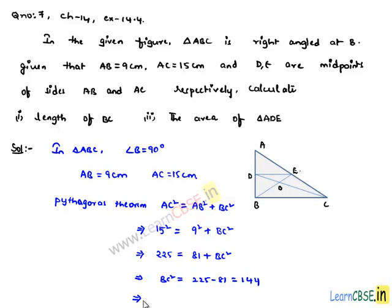This further implies that BC equals the square root of 144, which equals 12. Therefore, the length of side BC is equal to 12 cm.